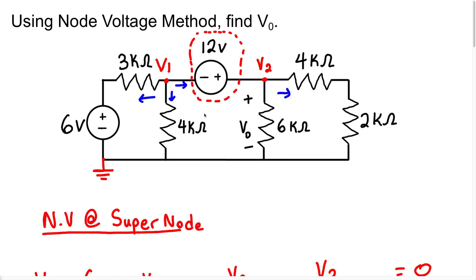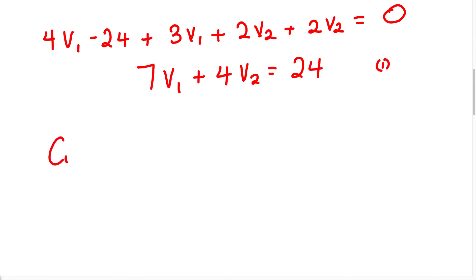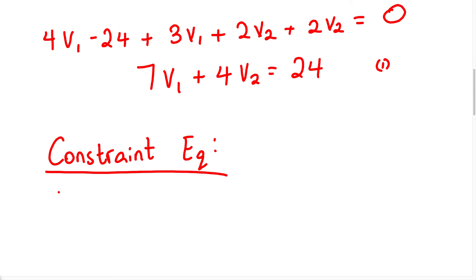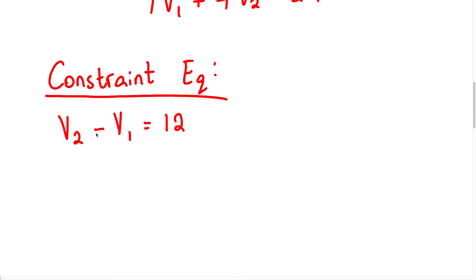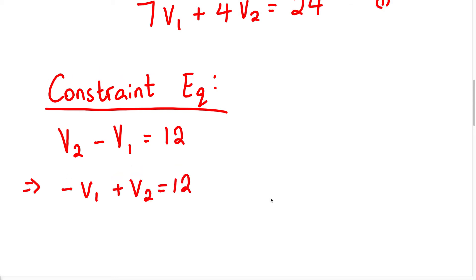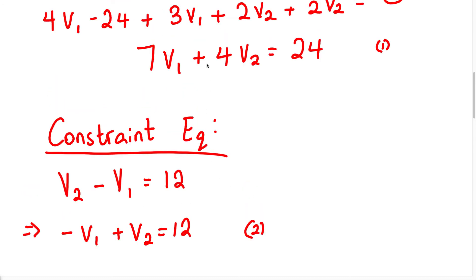Now let's write a constraint equation involving this 12-volt source. The polarity goes from negative to positive when we start from node 1, and positive to negative when we start from node 2. Therefore the constraint equation is V2 minus V1 equals 12 volts. We can rewrite this as negative V1 plus V2 equals 12. I'm going to call this Equation 2.